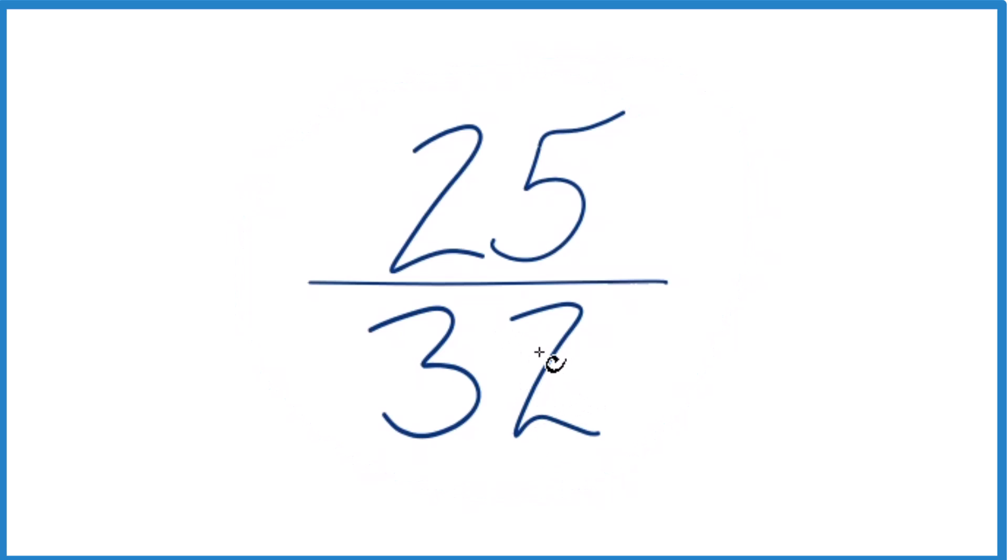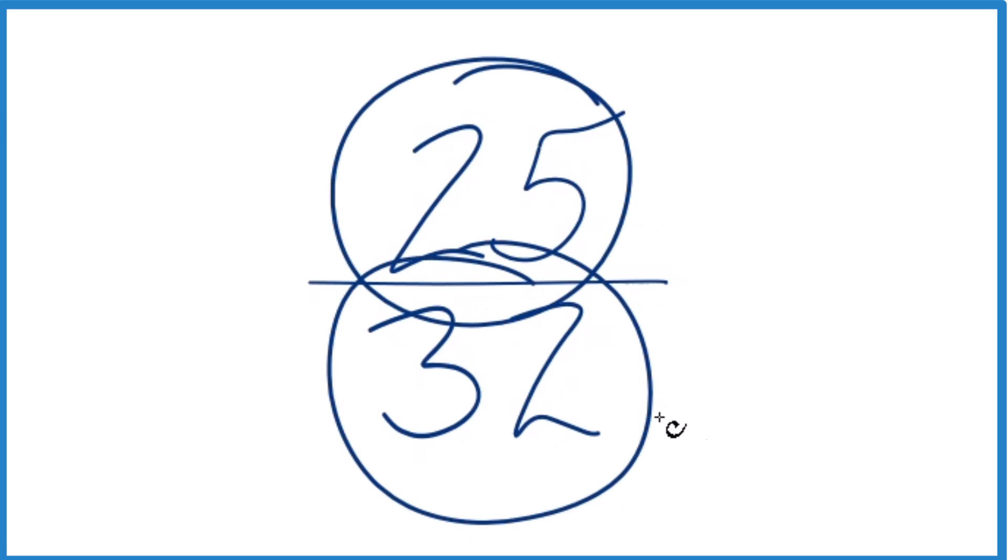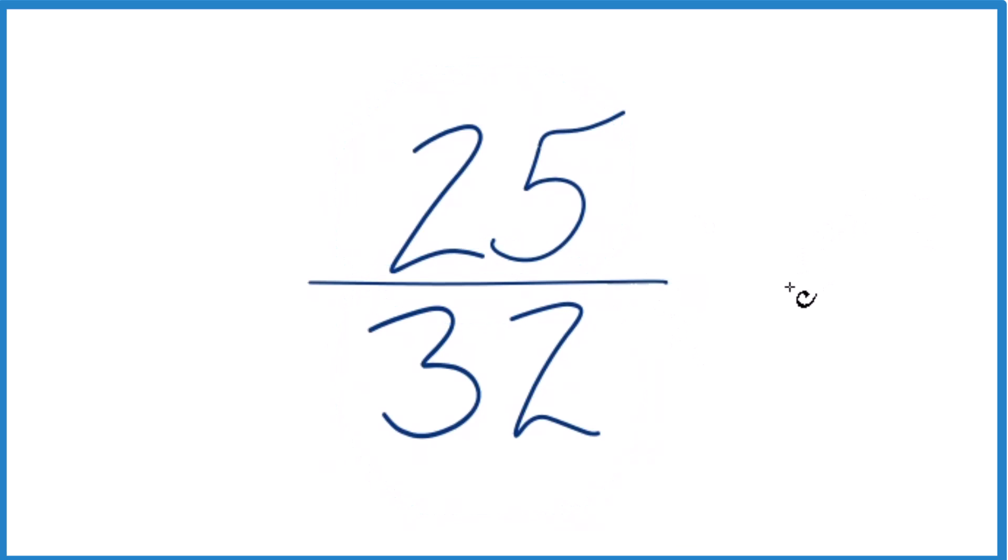So what we want to do, we want to find another fraction that's equivalent to 25 divided by 32. It has the same decimal value, it's just that we've reduced that fraction down to lowest terms.